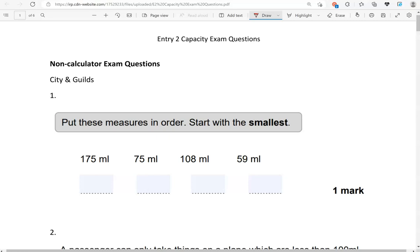So starting with the smallest, which number out of these is the smallest? That is 59. Because 59 is smaller than 75, smaller than 108, and smaller than 175. After that will come 75. Then 108.